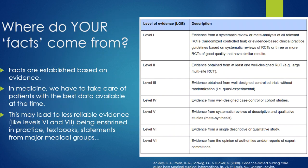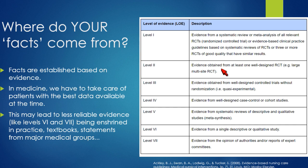There are varying levels of evidence. Level seven evidence is basically eminence-based medicine, where an authority figure slams their fist on the lectern and declares the answer — that's how medicine was practiced for a long time. Moving up, we have descriptive qualitative studies like case reports or case series, followed by meta-analyses, case control or cohort studies, and clinical trials without randomization.